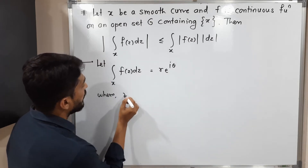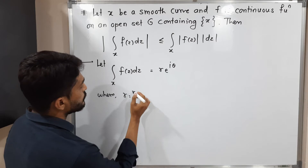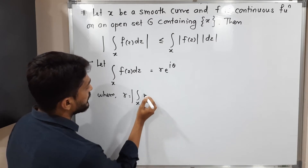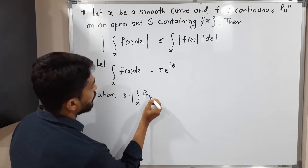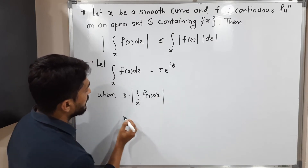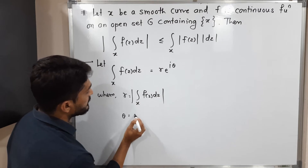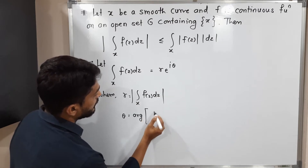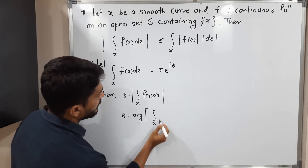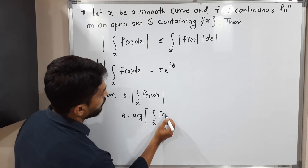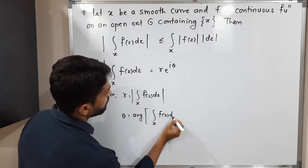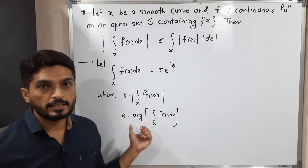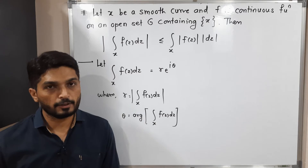The value of that integral will be a complex number, and I am expressing it in exponential form as r·e^(iθ). Here r is the modulus, so r equals the modulus of the integration over x of f(z) dz, and θ is the argument of that integral.